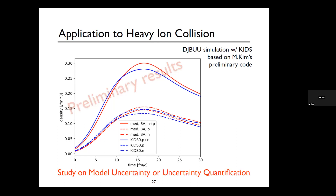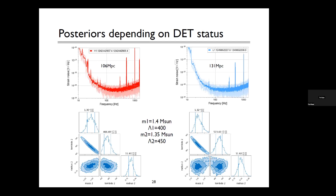To precisely measure the tidal deformability, we need to go back to the observation and detector side. Of course, gravitational wave detectors should be as sensitive as possible. On the data analysis side, using noise reduction and noise-hunting techniques, as well as statistical methods to reduce non-stationary noise, we can improve data quality and get better results from the posterior samples.